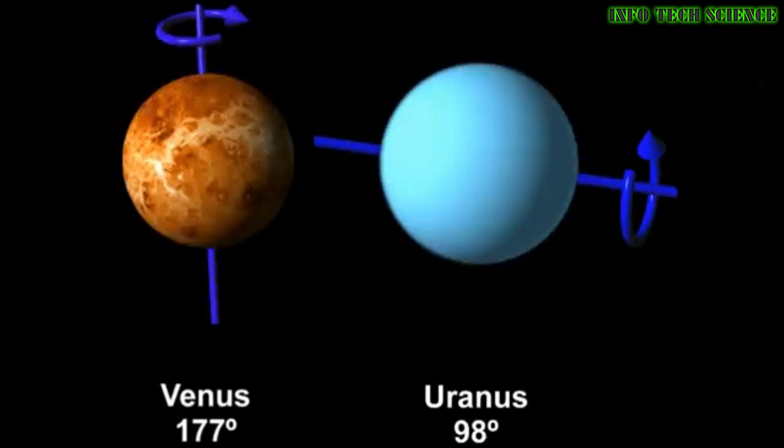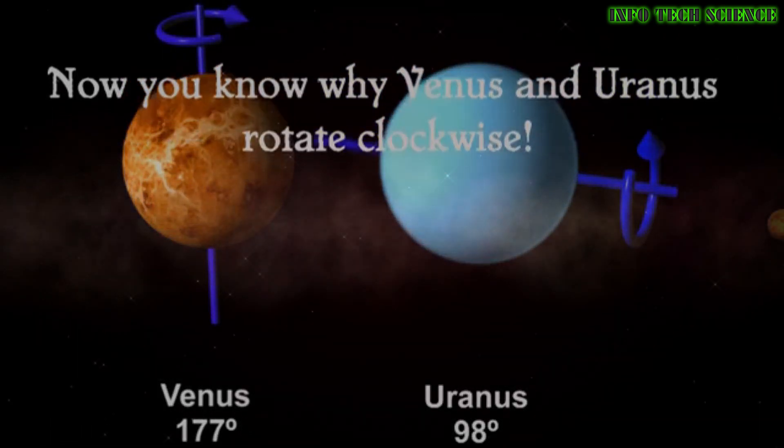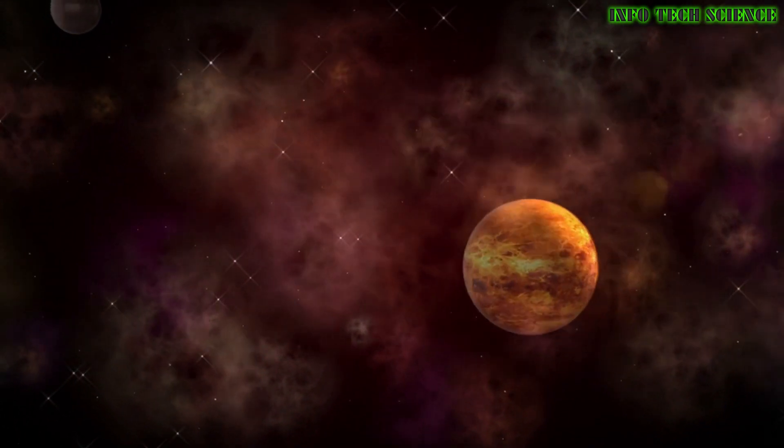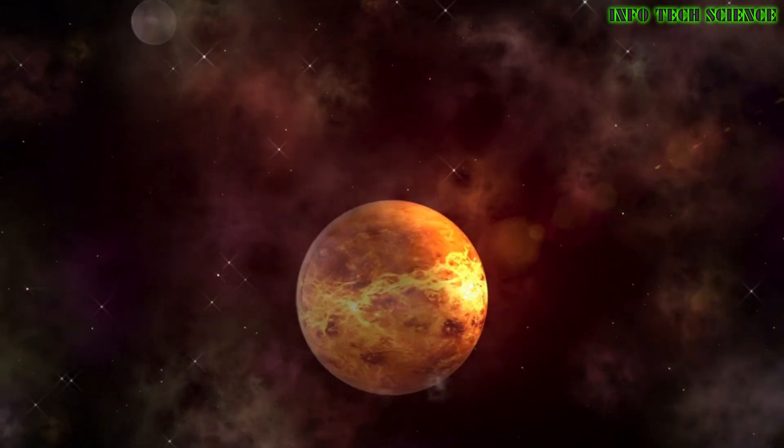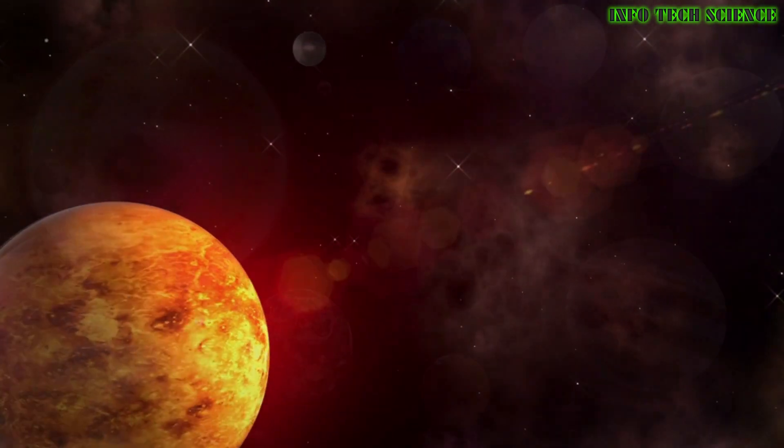An alternative explanation put forward by astronomers in 2009 is that Uranus once had a large moon, whose gravitational pull caused the planet to fall on its side. Eventually, the moon could have been knocked out of orbit by another planet, like a game of cosmic pinball.